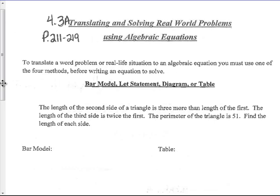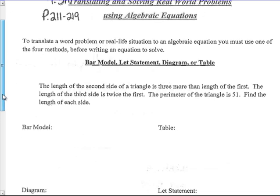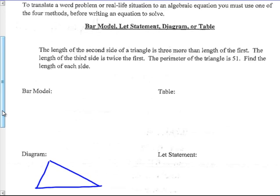This is section 4-3 in your textbook, pages 211 to 219, but many of these problems are not found in your book. So I'm on page 1 in your new packet. To translate a word problem or real-life situation to an algebraic equation, you must use one of the following four methods before writing the equation: a bar model, a table, a diagram, or a let statement.